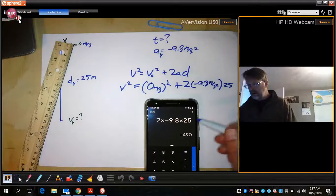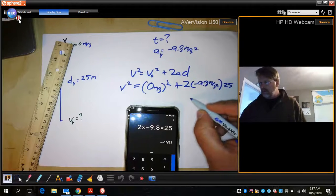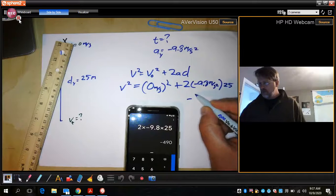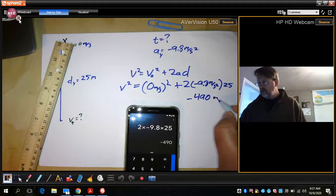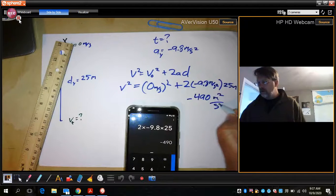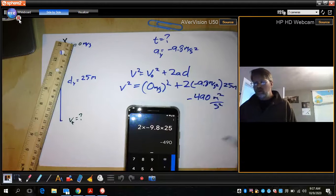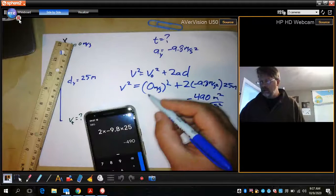So what we get is our answer. Two times 9.8 times 25 equals negative 490 meters. This is actually meters here, so it's meters squared over seconds squared. Now what we've noticed is we have a sign problem here. Because that equals v squared.